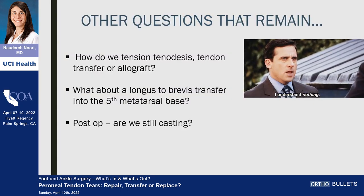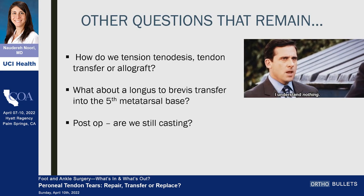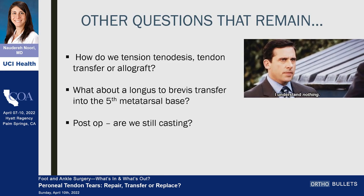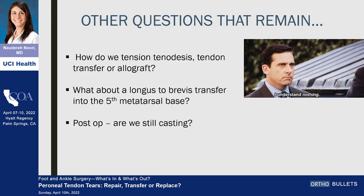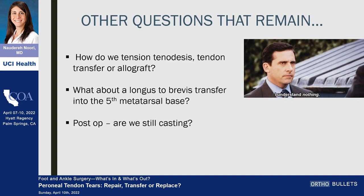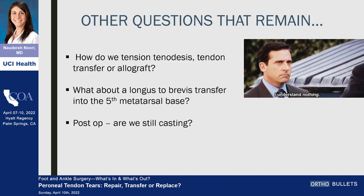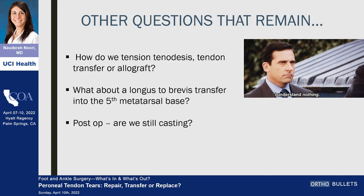There are still a lot of unanswered questions. How do we tension tenodesis, tendon transfer, and allograft — maximum eversion, plantar flexion at 50 degrees, 50% muscle excursion? Does it matter? What about a FDL transfer into the fifth metatarsal base to avoid bulky distal tenodesis? And post-op — all the literature still recommends casting and limiting motion for six to eight weeks, but if we're doing tendon work, isn't the goal to regain early motion? Isn't casting going to limit motion and cause tissue scarring? A lot of questions still remain.